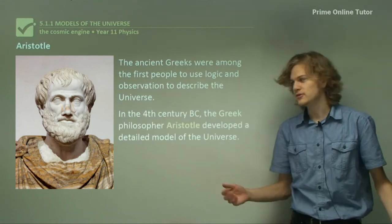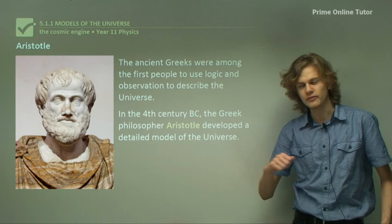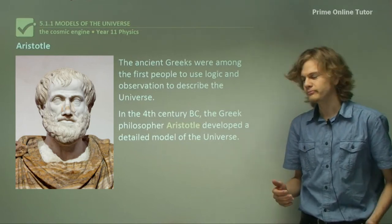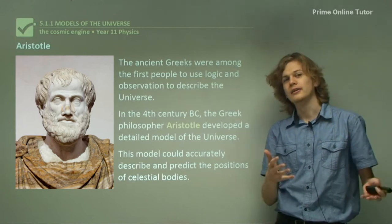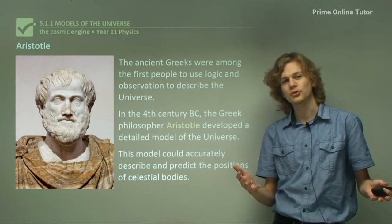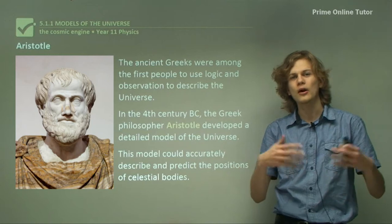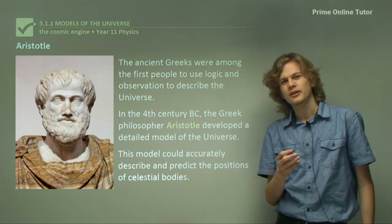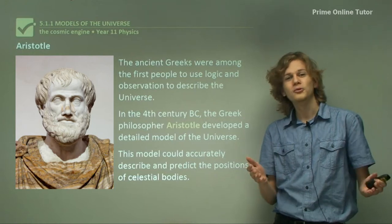In the fourth century BC Aristotle developed a detailed model of the universe. This model was able to accurately describe the motions of the planets across the sky as well as the way that the stars didn't move. It wasn't in fact all that accurate, but for our first try it was pretty good.